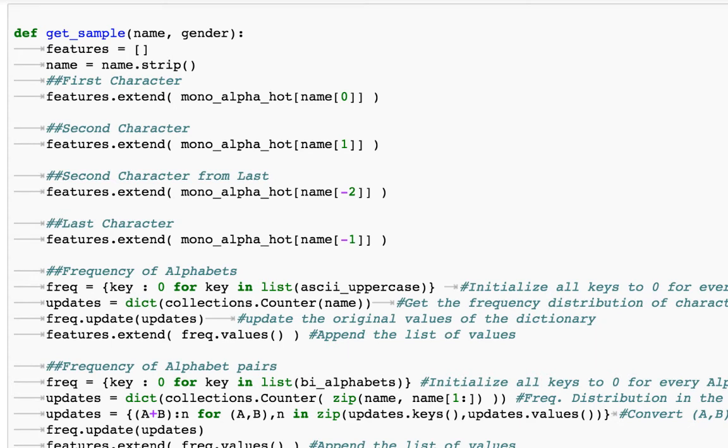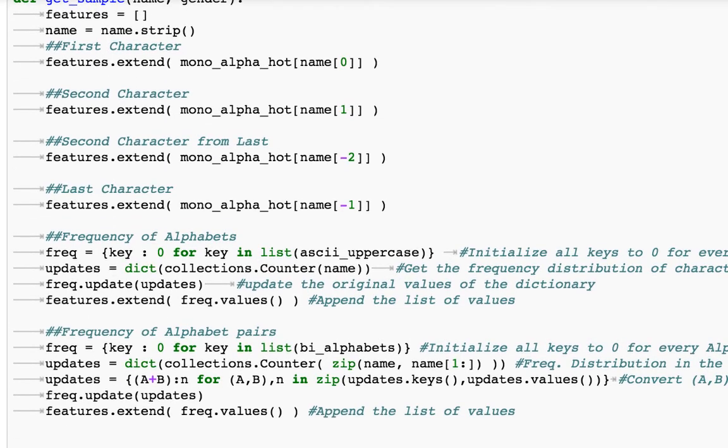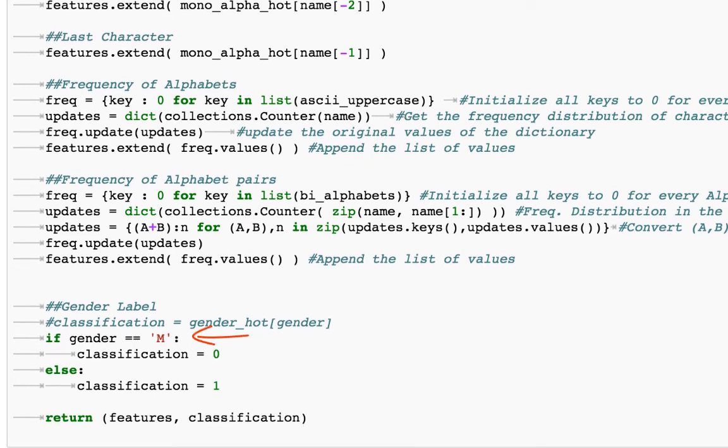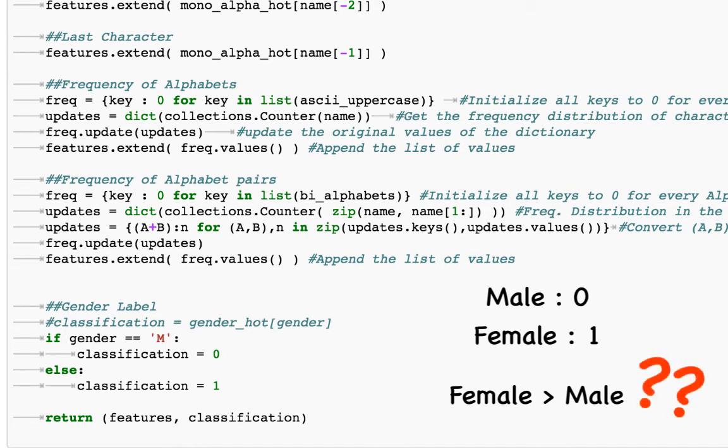We write a method called getSample that takes the training input name and gender, and then it creates the training sample by constructing the 806 features and appending a label. To get the 26 features corresponding to the frequency of alphabets, a dictionary of size 26 is constructed with keys as the alphabets and the values as the frequencies, initialized to 0. We then get the frequency distribution of characters in the name and update the dictionary. A similar procedure is followed for determining the frequency distribution of alphabet pairs. We also convert the label into its numeric form. The label is 0 for male and 1 for female.